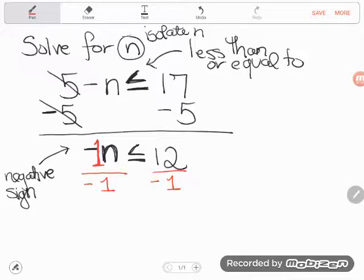But basically, to get rid of that negative in front of n, I'm going to divide both sides of the equation by negative 1. Now something really, really important happens.